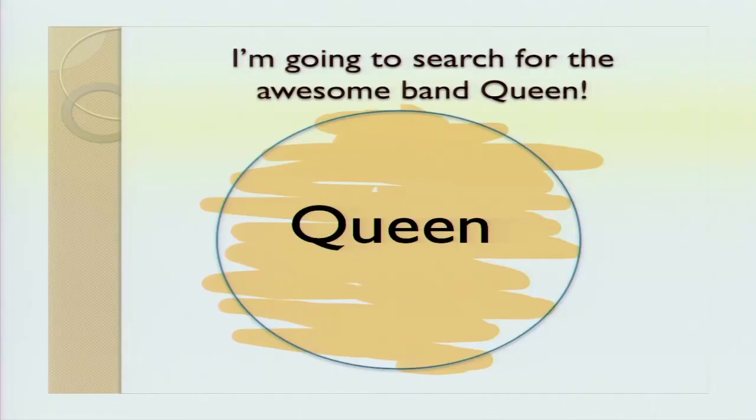So let's get to it. Let's say you're going to search for the awesome band Queen. So you go to Google, you go to your database, you put in Queen — and this has probably happened to you before — you get tons and tons of results that have nothing to do with your topic. So you get Queen size beds, or Queen of Sheba, or Queen Elizabeth, or Queen Mary — nothing to do with the band Queen.